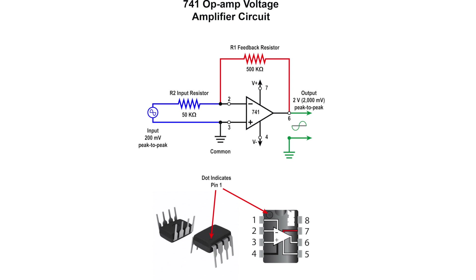The gain from the circuit is calculated as follows: R1 divided by R2 yields an op-amp gain of 10.